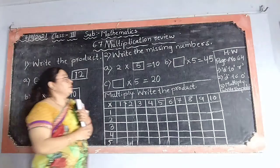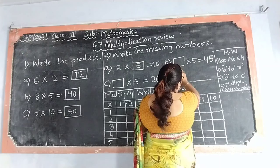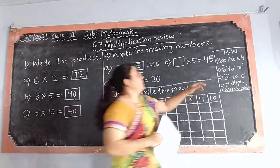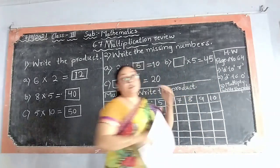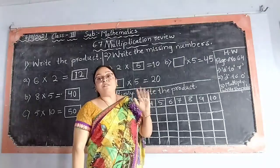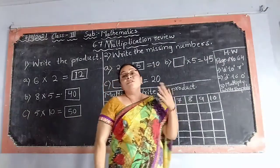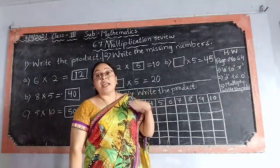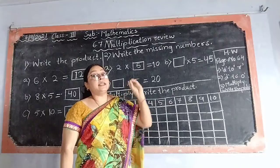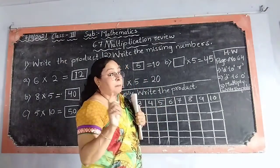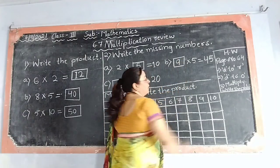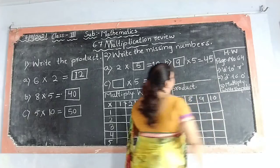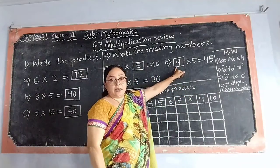I hope you are understanding. Now see: dash multiplied by 5 equals 45. We should read 5's table until 45 comes. 5 1's are 5, 5 2's are 10, 5 3's are 15, 5 4's are 20, 5 5's are 25, 5 6's are 30, 5 7's are 35, 5 8's are 40, and 5 9's are 45. So which number comes here? 9. The product is 45, so our answer is 9.